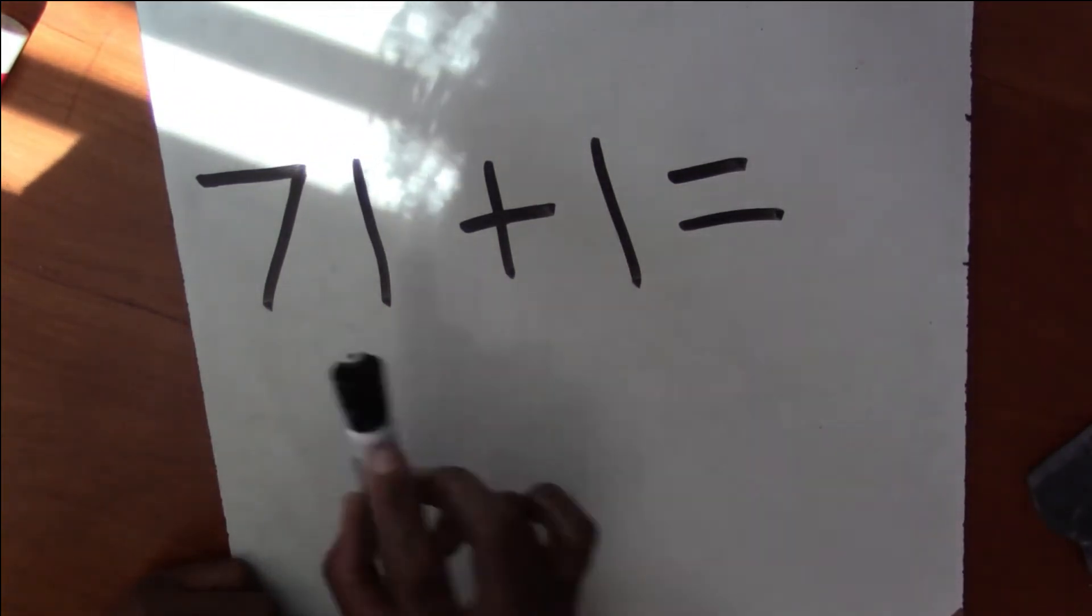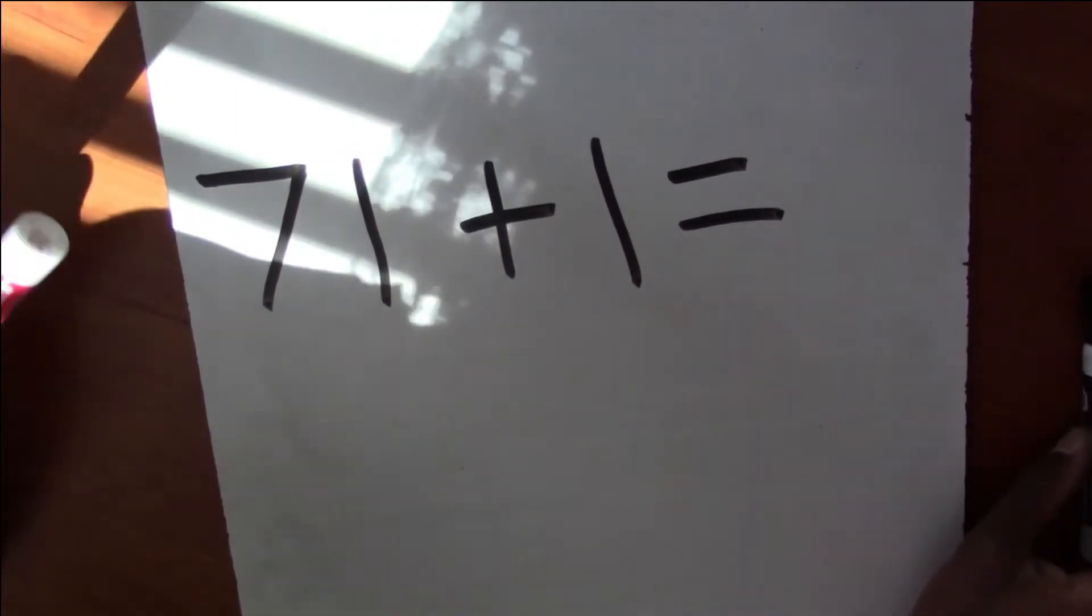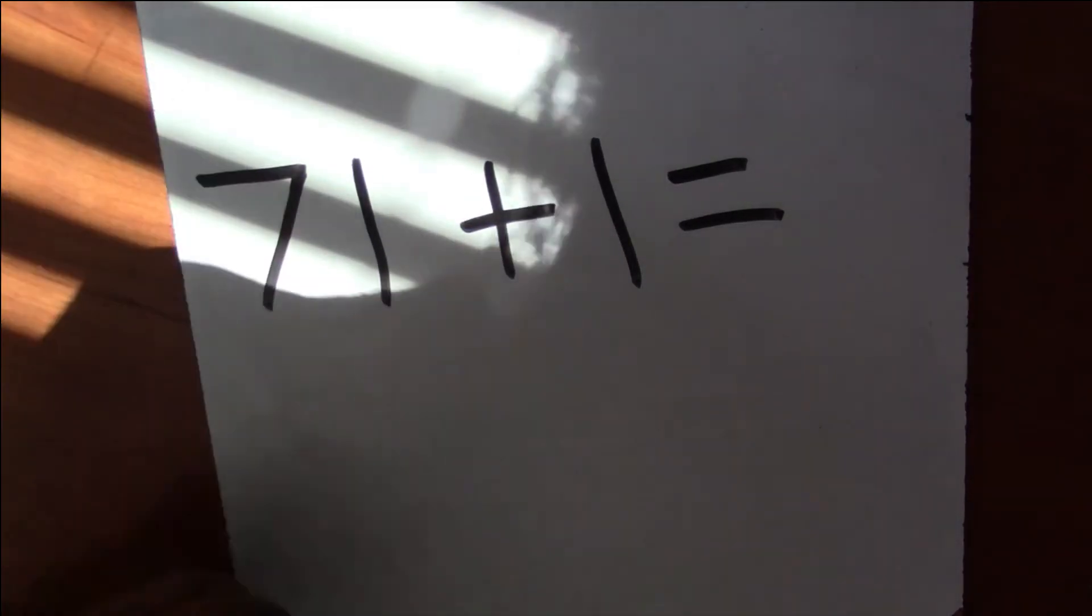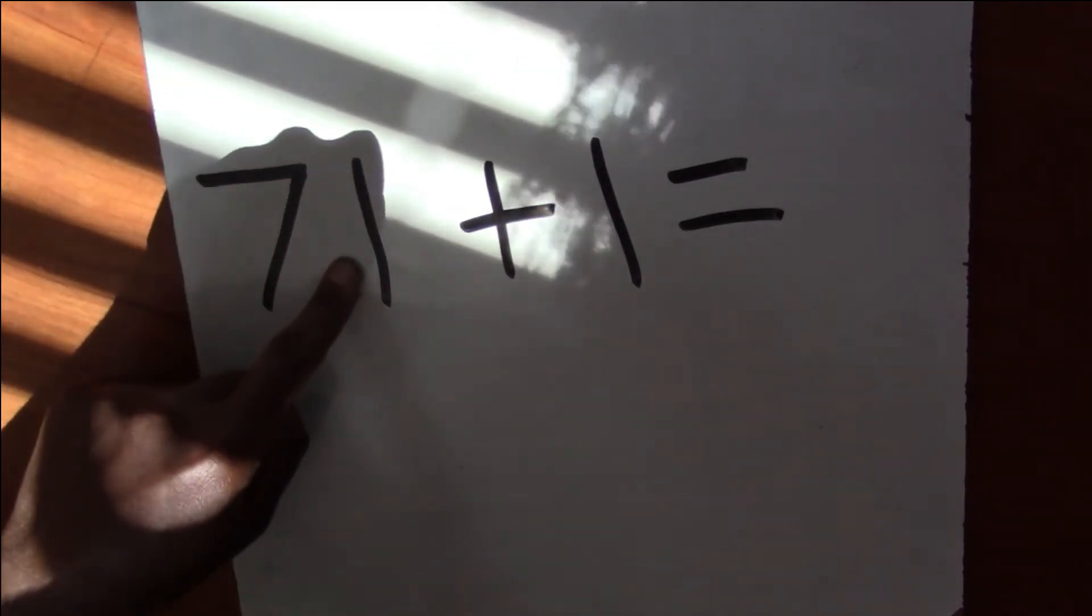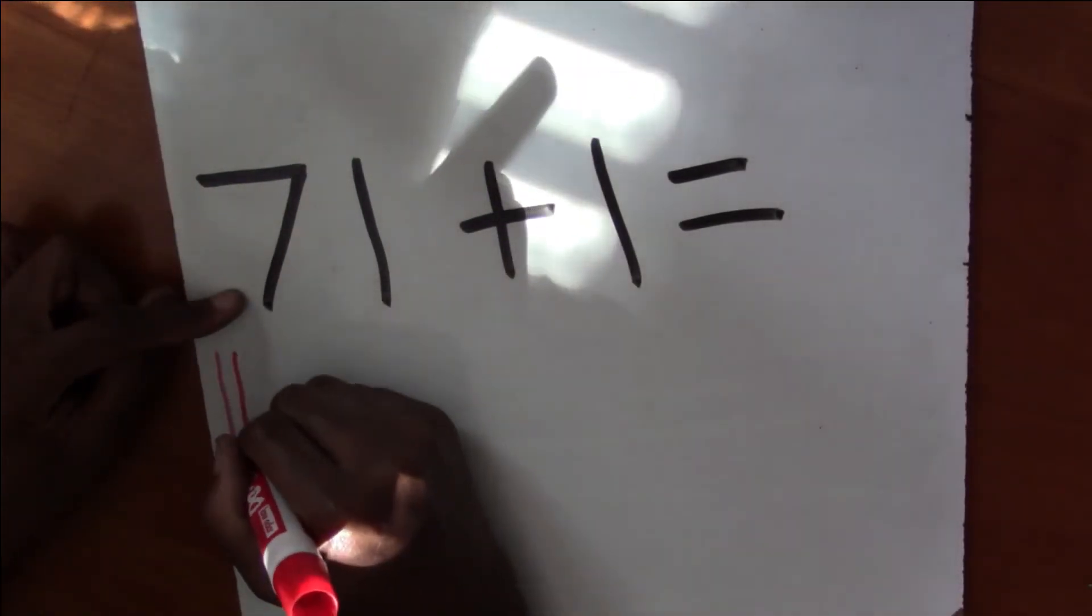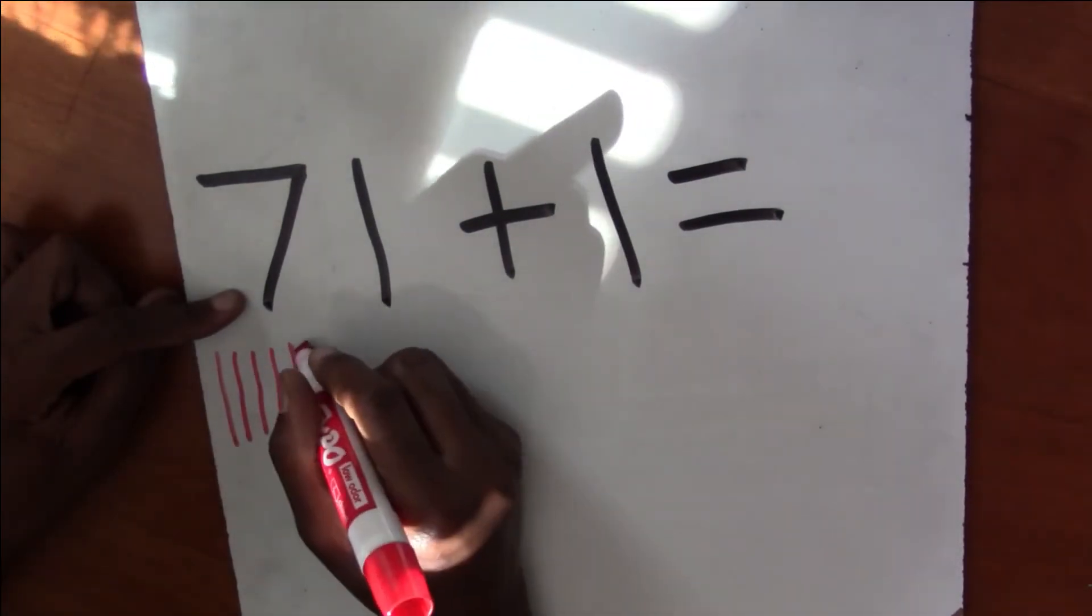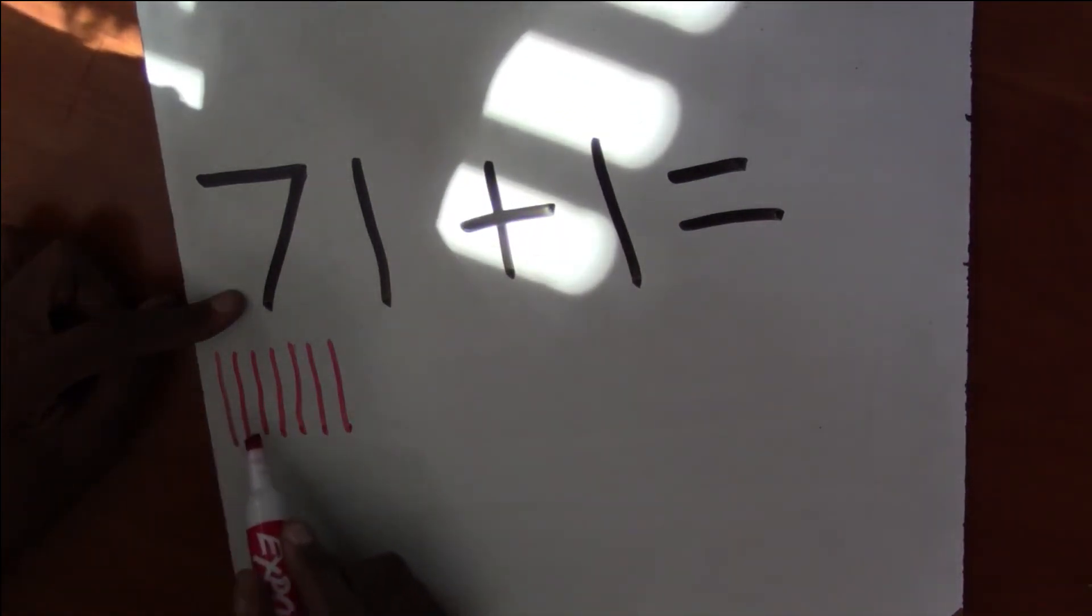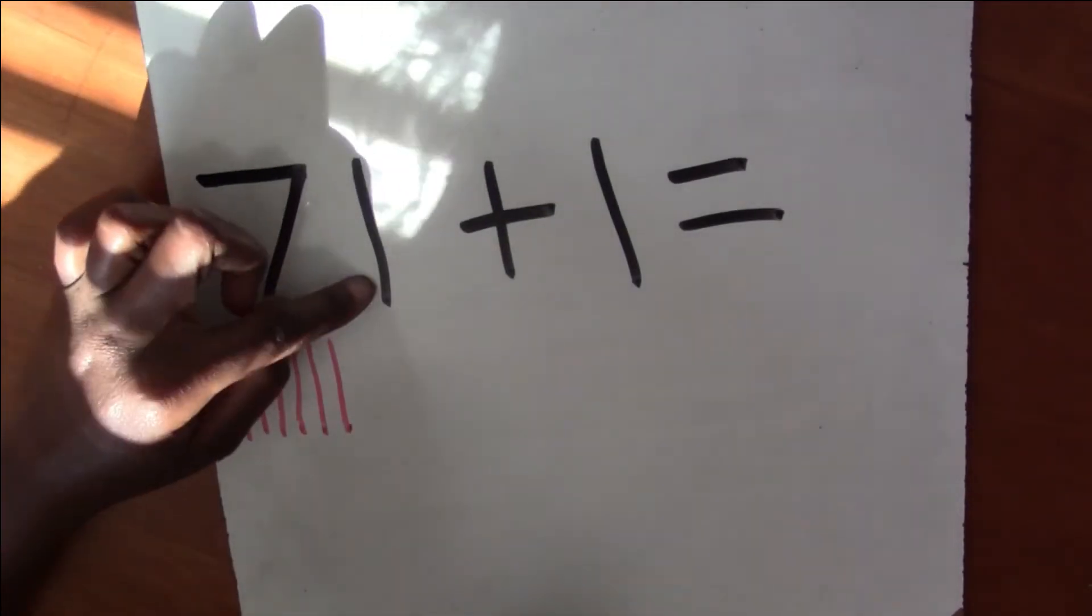So this is 71 plus one. So I'm going to draw my 10 sticks. So my first set of 10 sticks needs to be 71. So I'm going to draw seven 10s and one 1. So 71, 10, 20, 30, 40, 50, 60, 70. Seven 10s. Seven groups of 10.